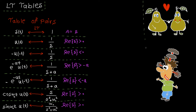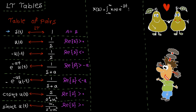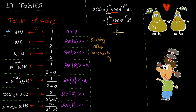Let's go through the table and practice together. The first signal is the delta function. Here is the Laplace transform integral as we learned in the first lecture of this chapter. Let's replace x(t) by the delta function. The function is non-zero only at the origin — it's zero before and after that. Based on the sifting property we just need to replace t by zero.